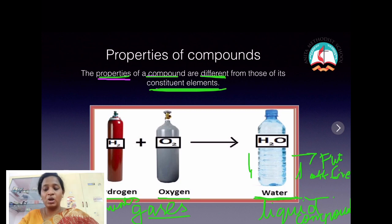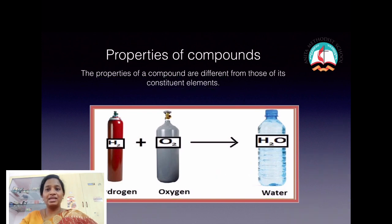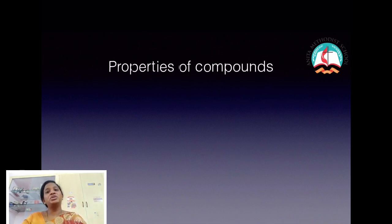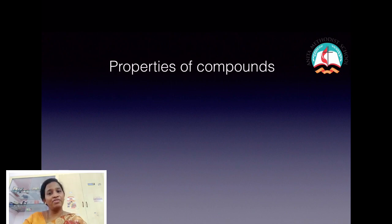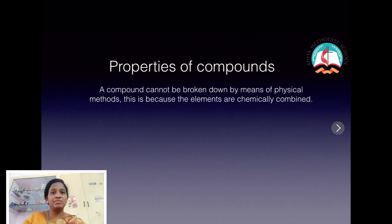The next property of a compound is that the constituent elements of a compound cannot be separated using physical methods.